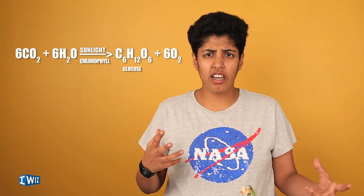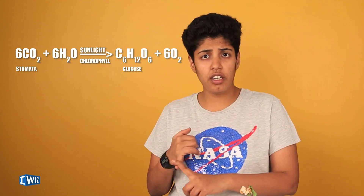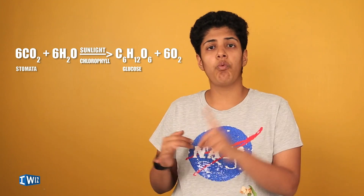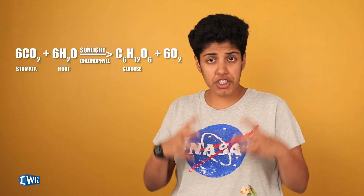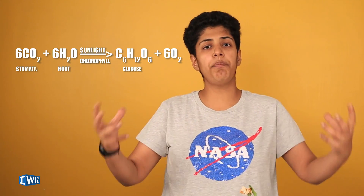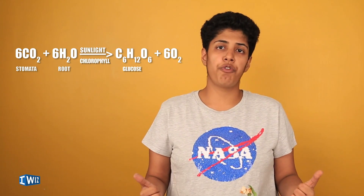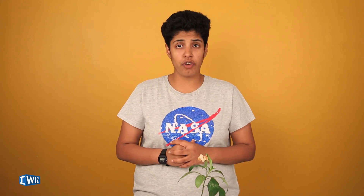How do plants get their carbon dioxide? By stomata. They get their water through the roots. They mix these two in the presence of sunlight to make their own food. We are going to study more about this process with the help of this plant over here.